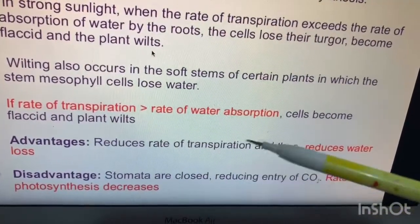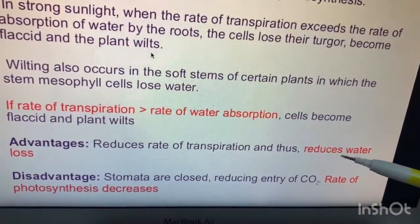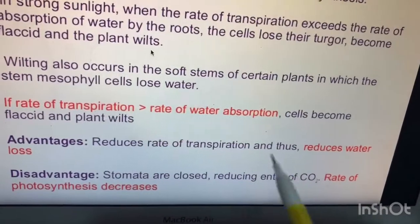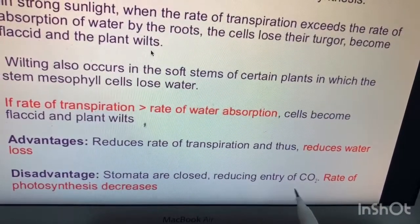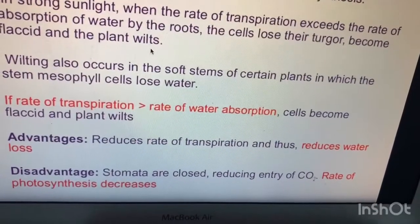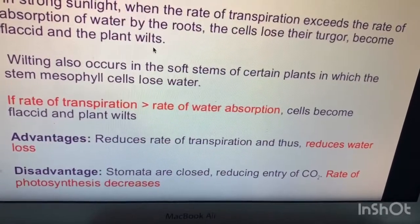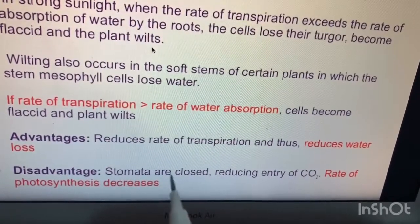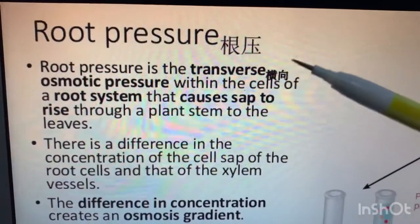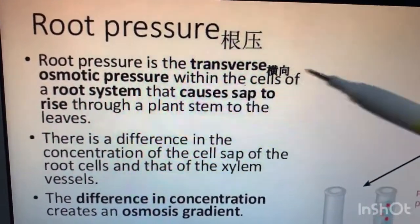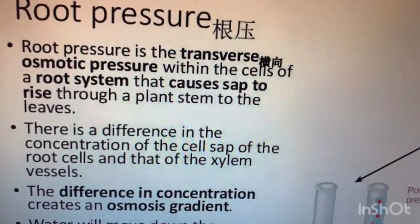The advantage of wilting is a reduced rate of transpiration, which also reduces water loss. The disadvantage is that the stomata are closed, reducing the entry of carbon dioxide, so the rate of photosynthesis decreases. Root pressure is the osmotic pressure within the cells of a root system that causes sap to rise through a plant stem to the leaves.